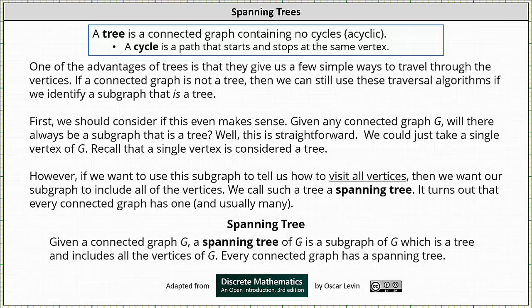It turns out that every connected graph has a spanning tree, and usually many. Given a connected graph G, a spanning tree of G is a subgraph of G which is a tree and includes all the vertices of G. Every connected graph has a spanning tree.